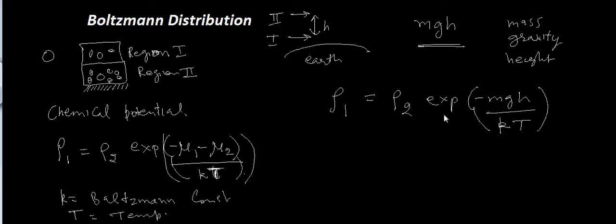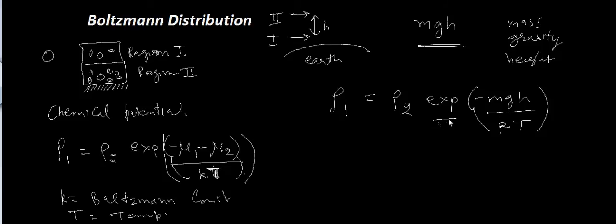Let me verify this is correct. Rho1 should have higher density as compared to rho2. Yes, this does make sense — the exponential term here is greater than one, confirming rho1 is greater than rho2.